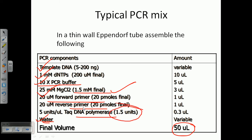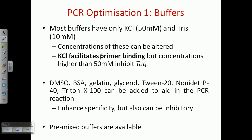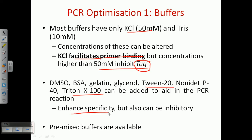Now let us talk about PCR optimization. First are the buffers. Most buffers have only KCl and Tris in them. KCl facilitates primer binding, but concentrations higher than 50 millimolar can inhibit the binding or inhibit the activity of Taq polymerase. Sometimes you can also see the presence of detergents like Tween 20 or Triton X-100 in the PCR reaction, which enhance the specificity of the reaction and ensure proper, specific binding of the primers.